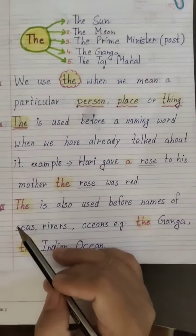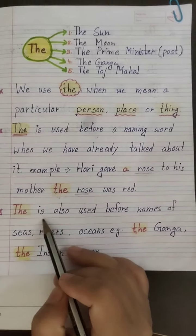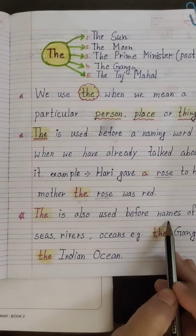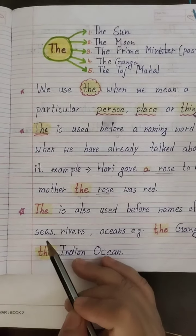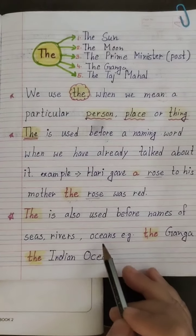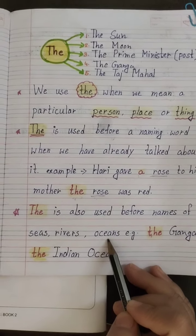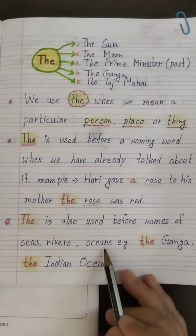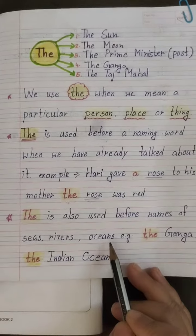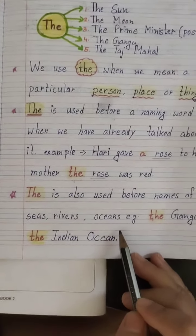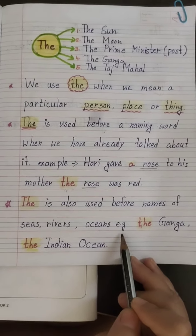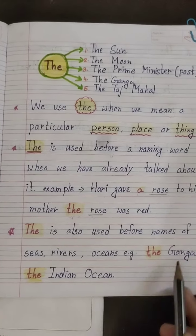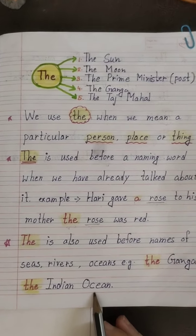Now second, 'the' is also used before names of sea, river, and ocean. For example: the Ganga, the Indian Ocean.